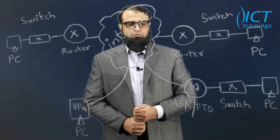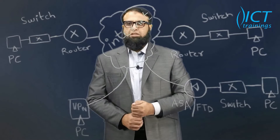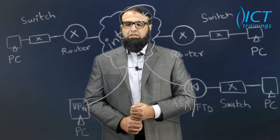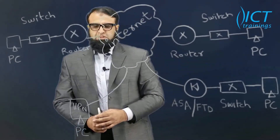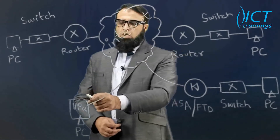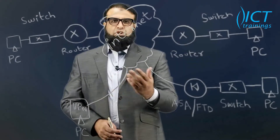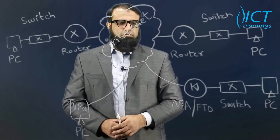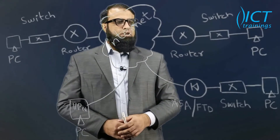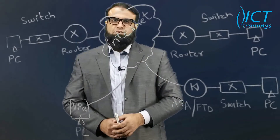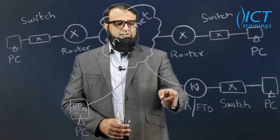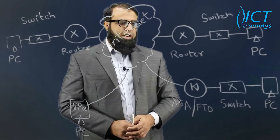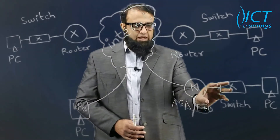In this design, we can see that there are three sides of a company that wish to talk to each other, and they have a user who is probably sitting at home or at a remote location and wishes to exchange information with all other PCs of the organization. Two sites are using routers to connect with the internet, and there is a site that has a firewall made by Cisco ASA or FTD connecting that site with the internet.